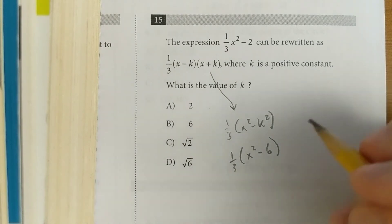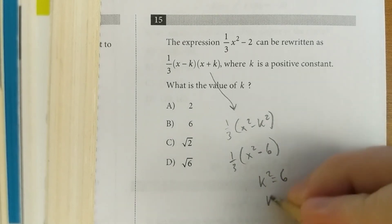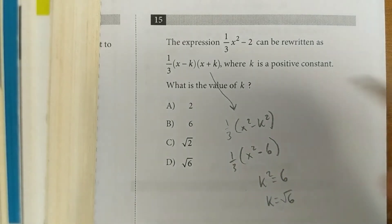Now looking at it, you can see everything's the same, except where this one has k², the other one has 6. That must mean that k is √6.